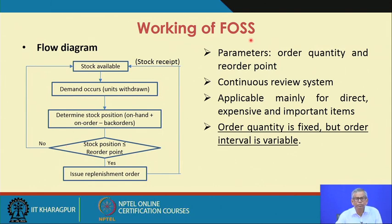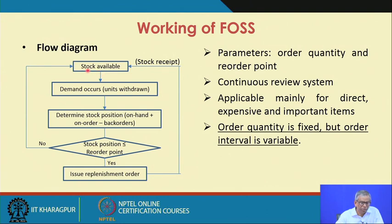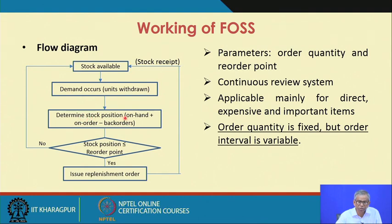We will explain the working of the Fixed Order Size System or FOSS continuous review system using a flow diagram. You start with the stock available for a given inventory item. When demand occurs, units are withdrawn from stock. Then you check the current stock position — which is on-hand inventory plus on-order minus back orders. Back orders refer to situations where a customer arrives but there is no stock, so they are asked to wait. You then check whether the stock position is less than or equal to the reorder point.